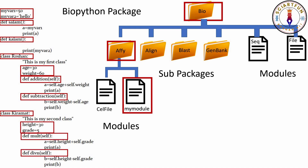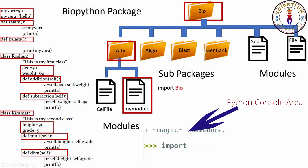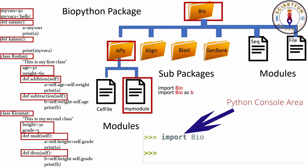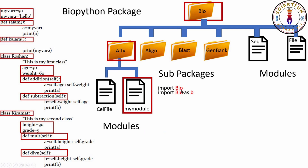Now let's learn how to import a package, subpackage, or a module. You have to use the import statement. To import the main Bio package, use 'import Bio'. Another command is 'import Bio as b' — here b is just a shortcut for Bio. If you import with its full name, you'll always type the full name; but if you import it as b, you only need to type b whenever you want to use the Bio package.